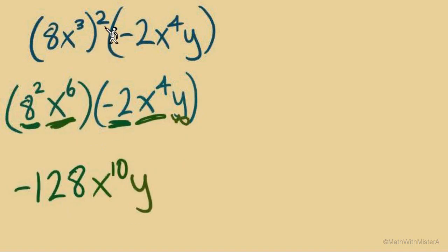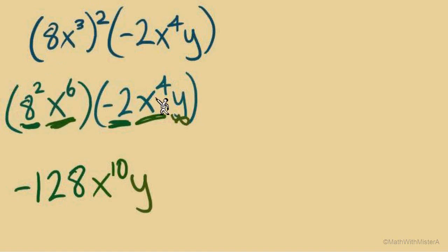The order of operations here is: exponent outside of parentheses is always what we start with. Once we've worked that in, then we can multiply our numbers together and collect like bases — putting the x's together and so on.